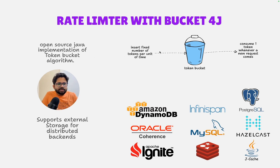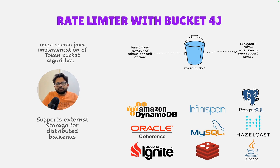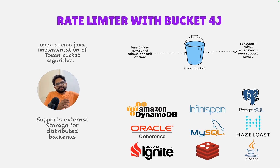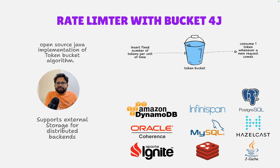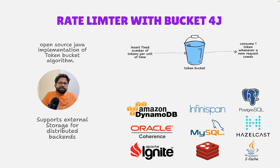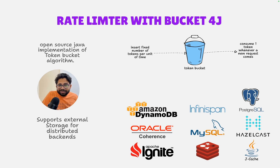Coming to the token bucket: imagine that you have a bucket and that bucket is getting filled at a fixed rate. Let's say you have set up that your API has 60 requests per second — that bucket will be filled with 60 tokens per second. Whenever a new request comes, you take one token from the bucket. You can take a token only if one is available. If it's not available, you cannot take it. When a token is available, you give a success response and proceed. When a token is not available, you return a 429 or request denied response, indicating the caller doesn't have enough quota for that minute or hour.